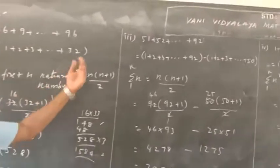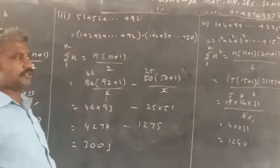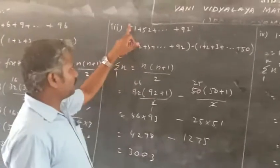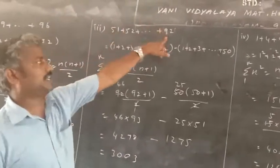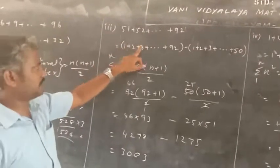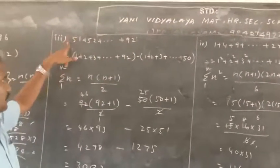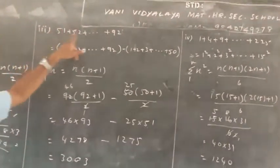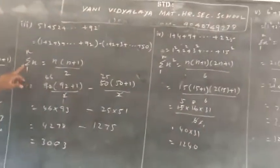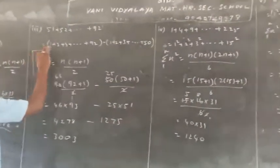Next, third one: 51 plus 52 plus 53 plus etc. plus 92. In this sum, use the formula for sum of first n natural numbers. This is 51 to 92, so convert it: first term to last term is 1 plus 2 plus 3 plus etc. to 92, minus in front of first term — in front of first term is 50 — so 1 plus 2 plus 3 plus etc. plus 50. So use sum of n terms formula n into n plus 1 by 2.